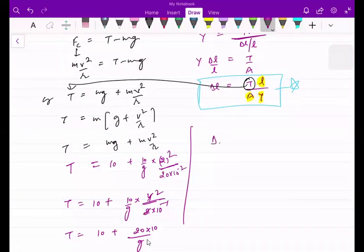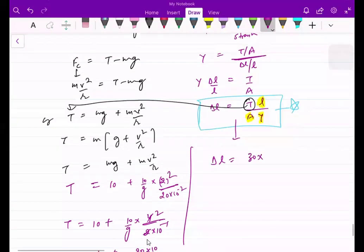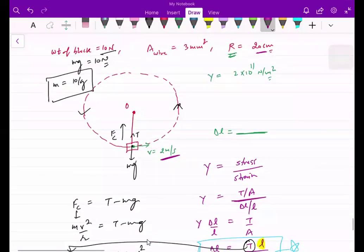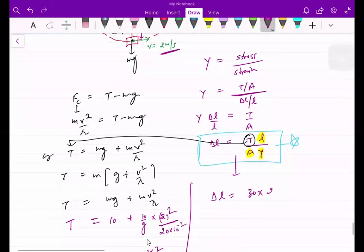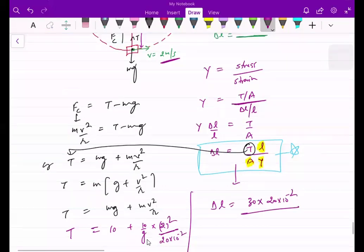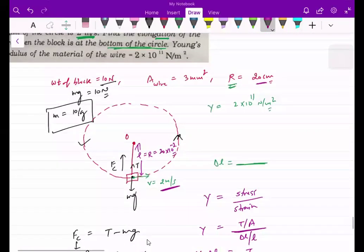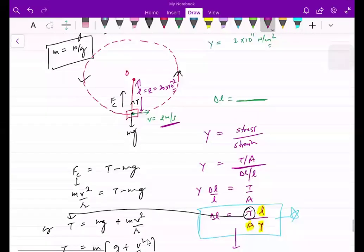With this tension, when we calculate delta L, we will take length which is the radius, 20 cm. We have to change - area is 3 mm square, and Young's modulus.